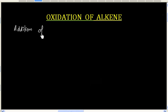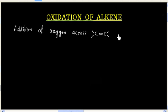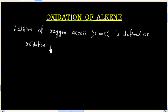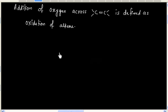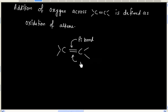Addition of oxygen across a carbon-carbon double bond is defined as oxidation of alkene. If you consider a carbon-carbon double bond, it has a pi bond and it has a sigma bond.